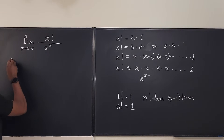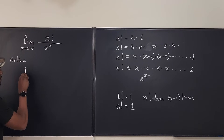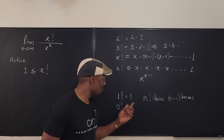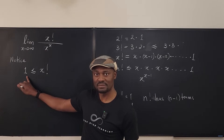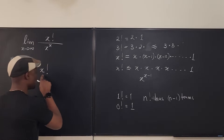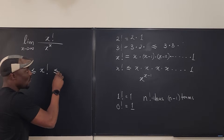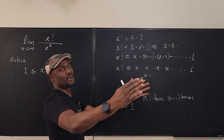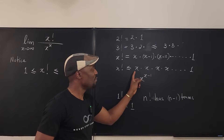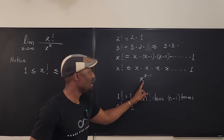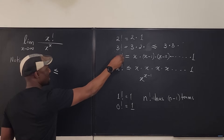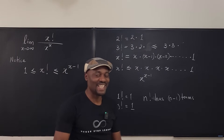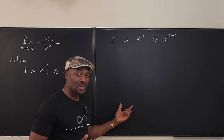I'm going to make a claim: notice that 1 is less than or equal to any factorial you compute — we just explained that the smallest factorial is 1. And any factorial you compute will always be less than or equal to the case where you refuse to subtract and keep all terms as x, giving x to the power (x minus 1). So: 1 ≤ x! ≤ x^(x−1). This is the key to taking this limit — we build the squeeze theorem from these two inequalities.